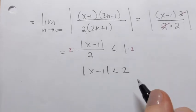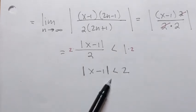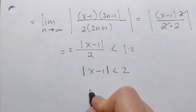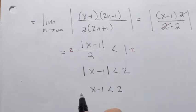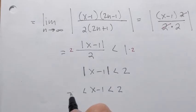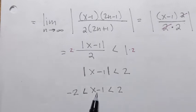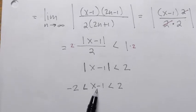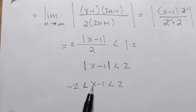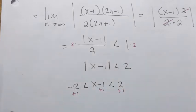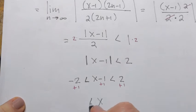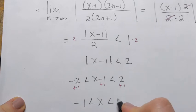We expand the absolute value inequality. Since the less-than sign is strict, we rewrite it as a double inequality: negative 2 is less than x minus 1, which is less than 2. Then adding 1 to each part isolates x, giving x between negative 1 and 3.